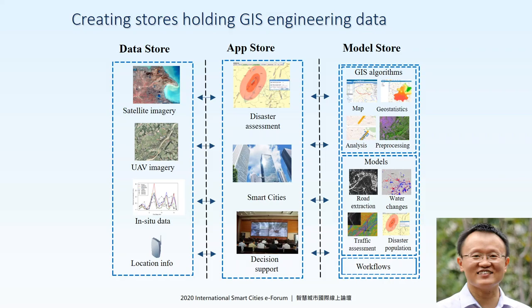So for this infrastructure for engineering data, what are the basic elements? We propose there are three basic stores: the data store, the model store, and then the app store.